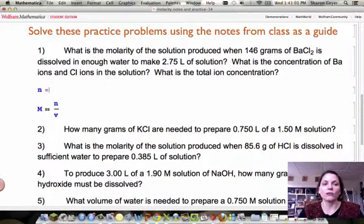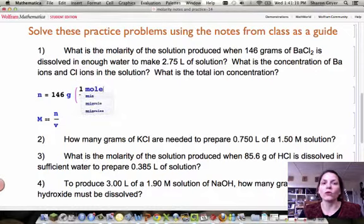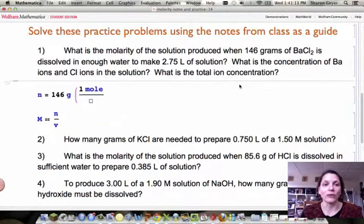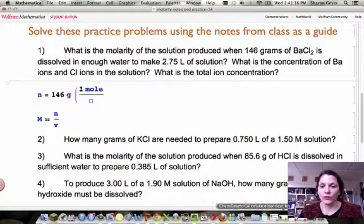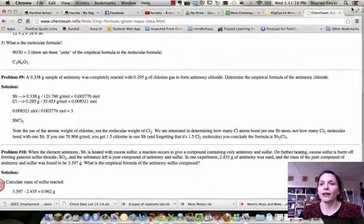Well, N is equal to the number of moles. Well, we don't have moles. We have grams. So here's where our mole application comes in. We have to change from grams to moles. So for every one mole of barium chloride, well, we need to know the formula mass of barium chloride.